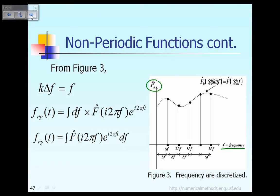For example, if you take a look on the figure, at this point right here the frequency is delta-f. At this next point the frequency is 2·delta-f, here the frequency is 3·delta-f, and so on. So in general, at any location like this one, the frequency is equal to k times delta-f.